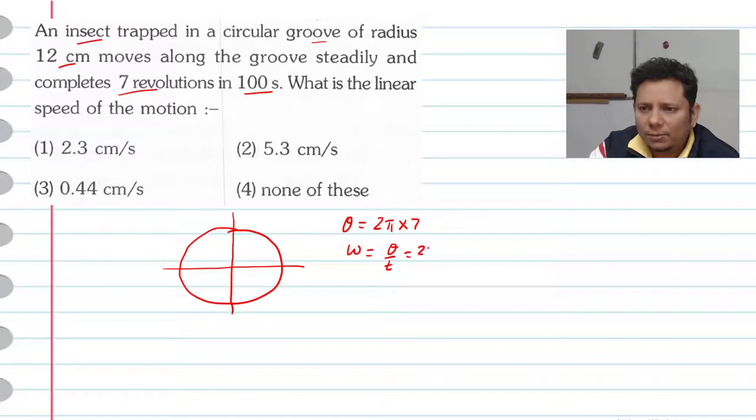This is 2π. If you write 22/7 multiplied by 7 divided by time, so time is 100 seconds, the 7 will cancel. So the value of omega is 2 × 22/100, which is radians per second.